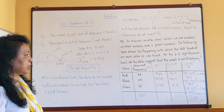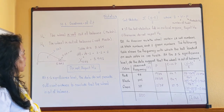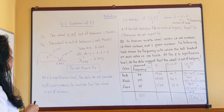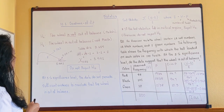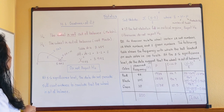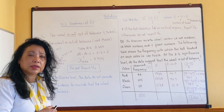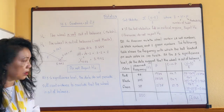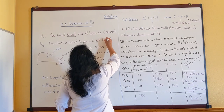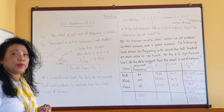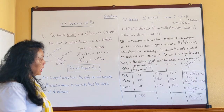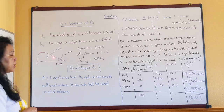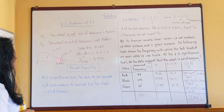Let's continue the example. Because I didn't have room before, I'll now go back to state the null and alternative hypotheses. The null hypothesis is that the observed and expected frequencies match — meaning the wheel is not out of balance. The alternative hypothesis is that they are not matched — meaning the wheel is out of balance. The test statistic we calculated is 1.061.